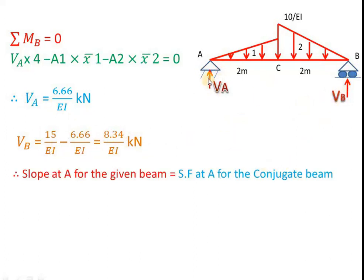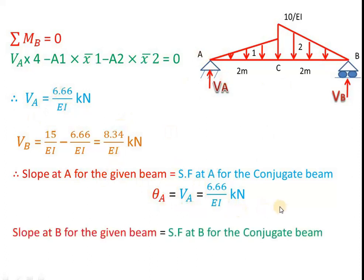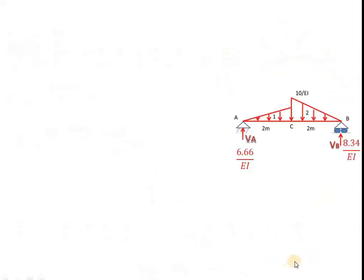The slope at A for the given beam equals the shear force at A for the conjugate beam. Shear force at A for the conjugate beam is the reaction VA. So theta A = 6.66 by EI kNm². Similarly, to get the slope at B for the given beam, we calculate the shear force at B for the conjugate beam. Since we are approaching from the right end, theta B = minus VB = minus 8.34 by EI kNm².